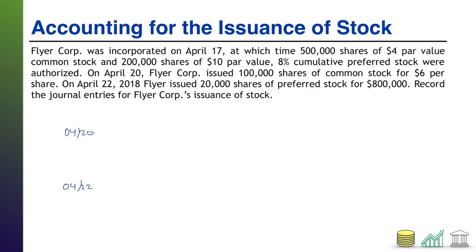On these days, you are issuing that stock for cash, so on both days we are going to have a debit to cash. On both days we are issuing stock — on the 20th we're issuing common stock, on the 22nd we're issuing preferred stock. Now we're going to have to do some math to figure out what these things are being valued at.